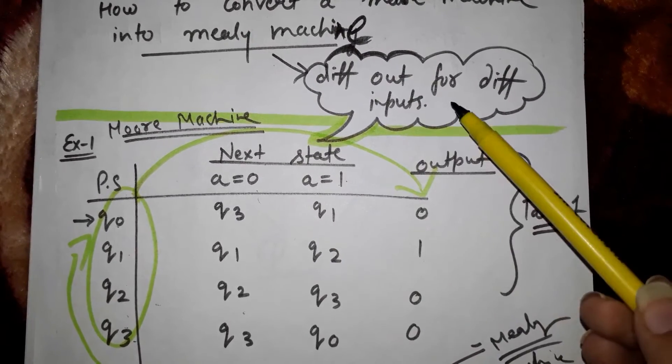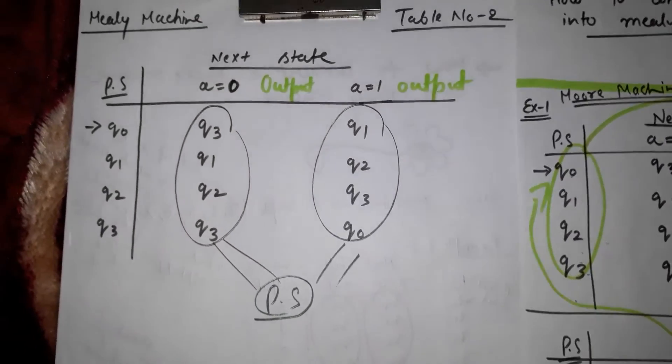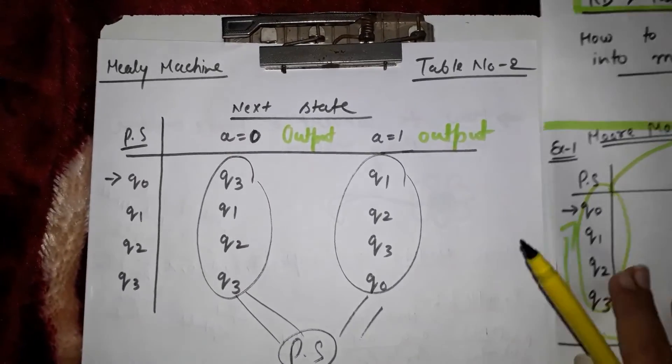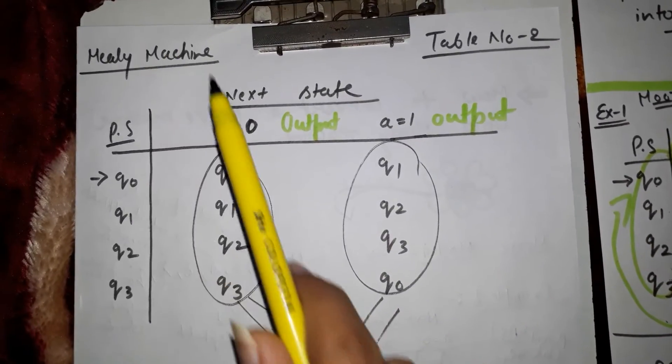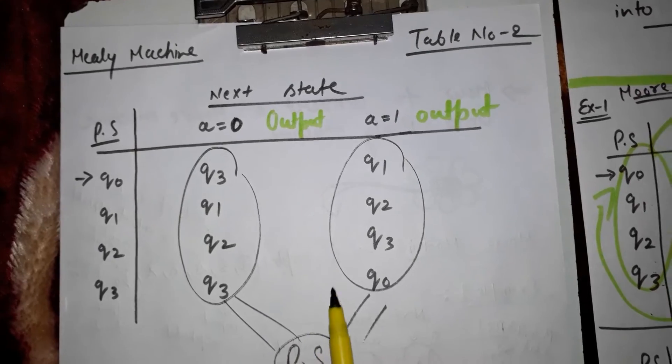This is the new table for the Mealy machine. When input is zero, output would be like this; when input is one, the output would be like that. Consider these next states as present states.